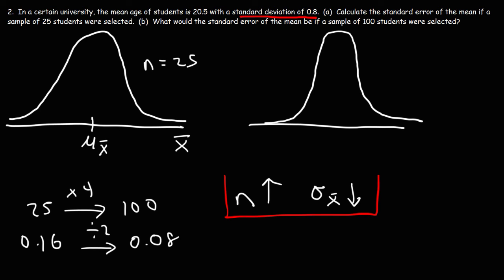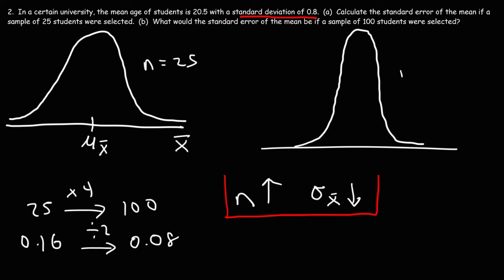It's going to be narrow in shape, but the height is going to be greater. So that's a visual representation that shows the effect of increasing the value of n. The standard error will decrease,